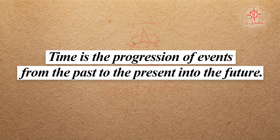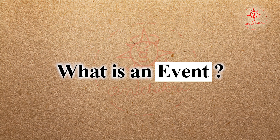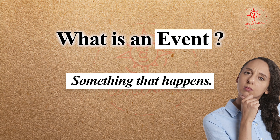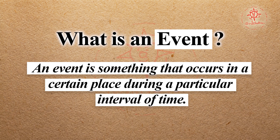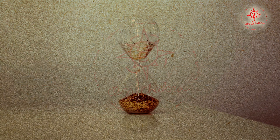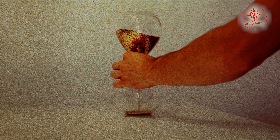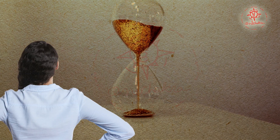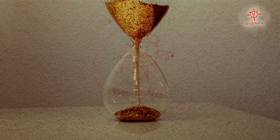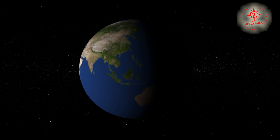Physicists define time as the progression of events from the past to the present into the future. If we ask what an event is, we can say something that happens — but that may not be complete. An event is something that occurs in a certain place during a particular interval of time. Events and time are interlinked; generally, time is the space between two events. To measure time you need to witness at least two events, and that's how we calculate the duration between them.